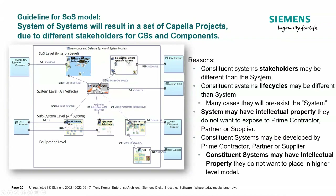Reasons for doing this hierarchy: constituent systems may have different stakeholders per system. The systems also may have different lifecycles — if you have a FLIR that's changing due to component changes, you don't want to be stopping the system of systems model every time. There's also intellectual property: the person working at the drone level may have IP they don't want to expose to everyone. Likewise, the person who develops the FLIR may have technology they don't want to expose at the higher level. By separating information into different levels, we can actually protect intellectual property rights.